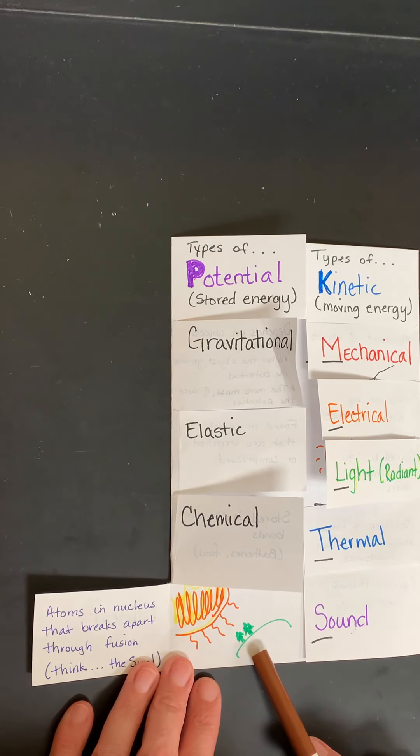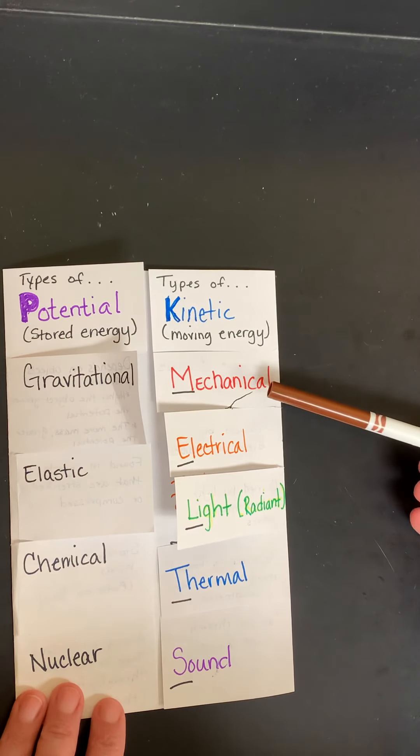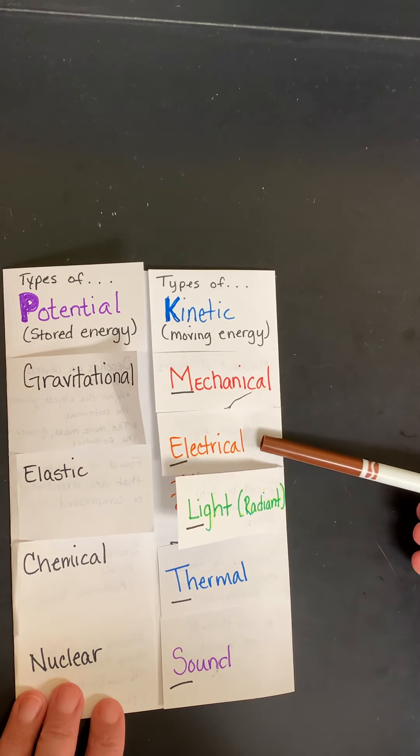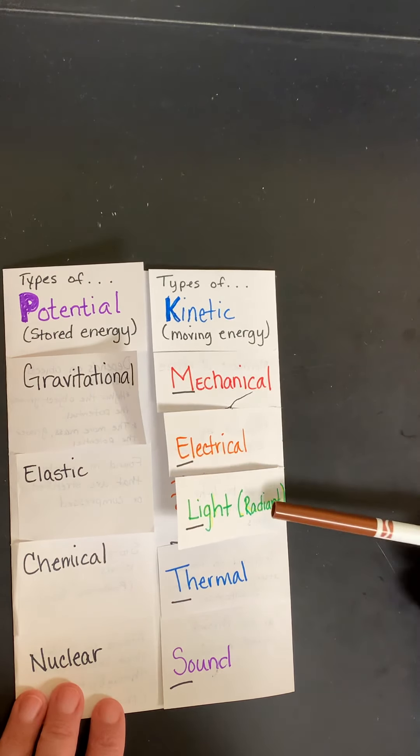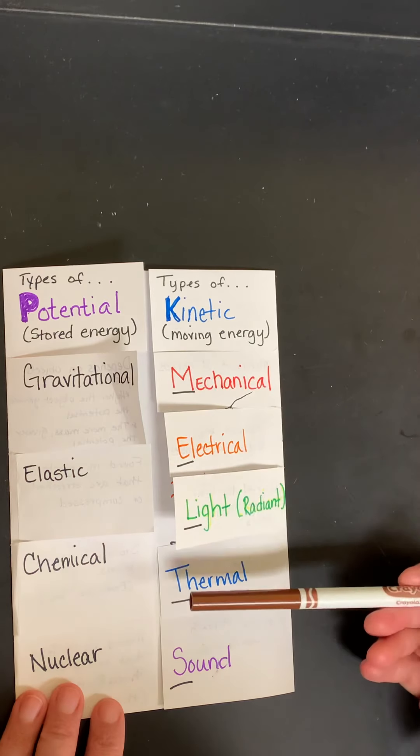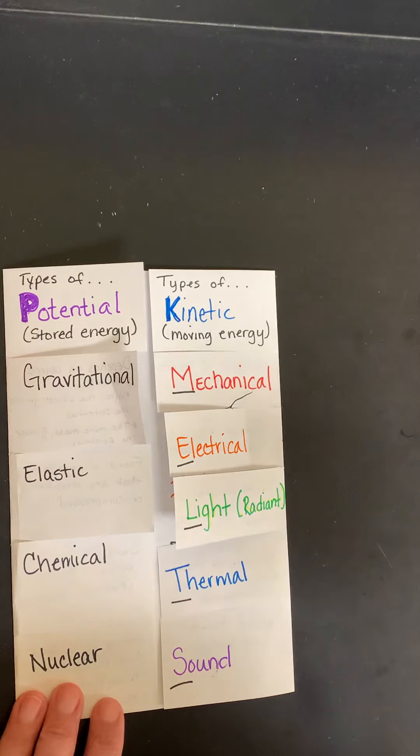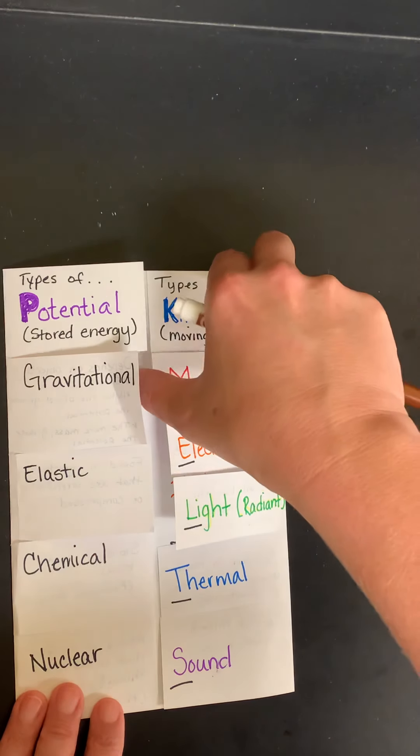So those are the four different types of potential energy. Now we're going to talk quickly about the five types of kinetic energy. You might be familiar with this from elementary school. Remember, kinetic energy is moving. We have mechanical, electrical, light—light is also referenced as radiant—thermal, and sound. So if I look at the first letter of each one, I'll get M-E-L-T-S, which spells melts. So we always want to think about melts when we're talking about kinetic energy.